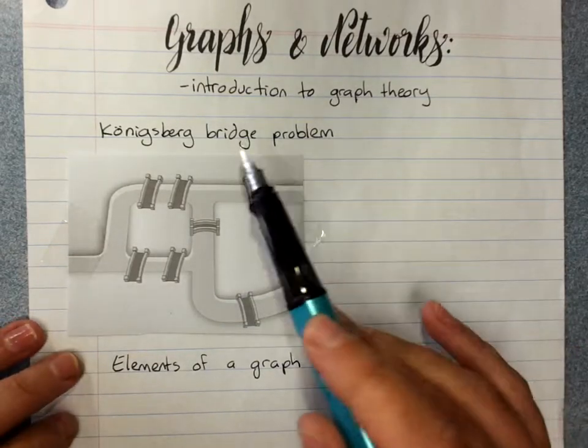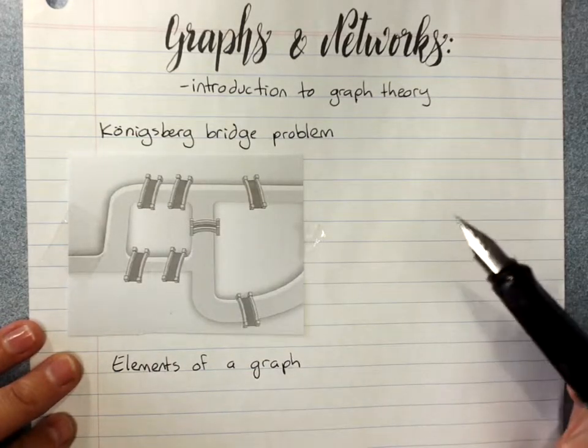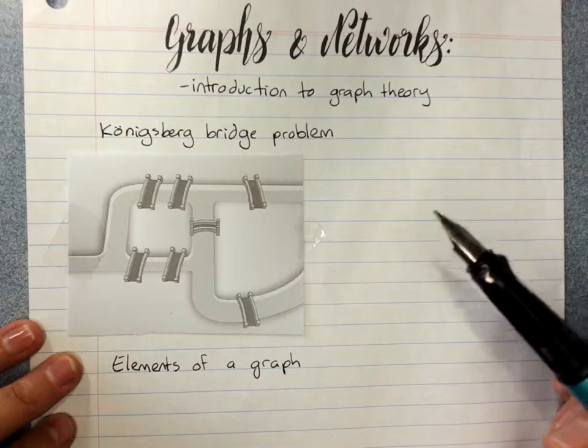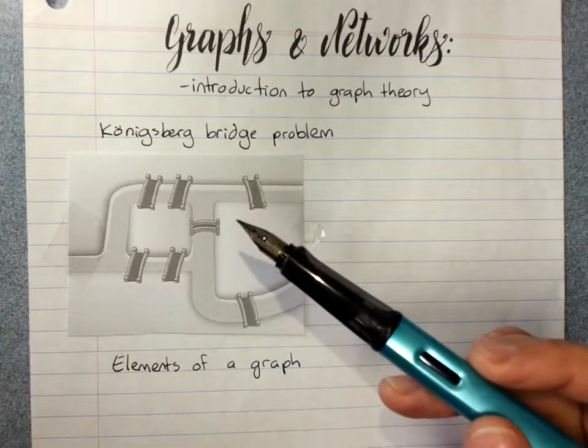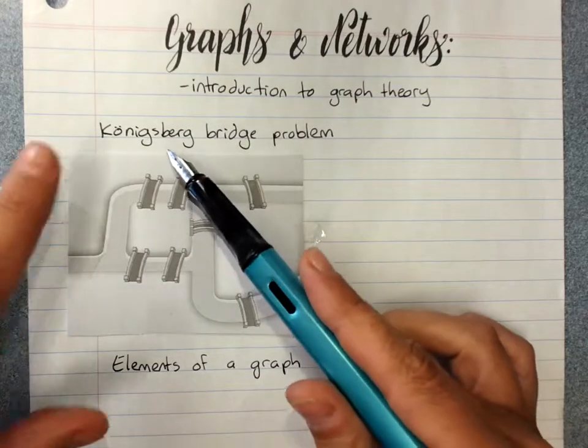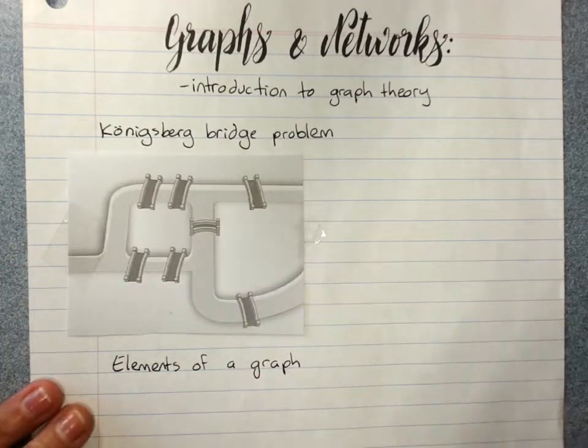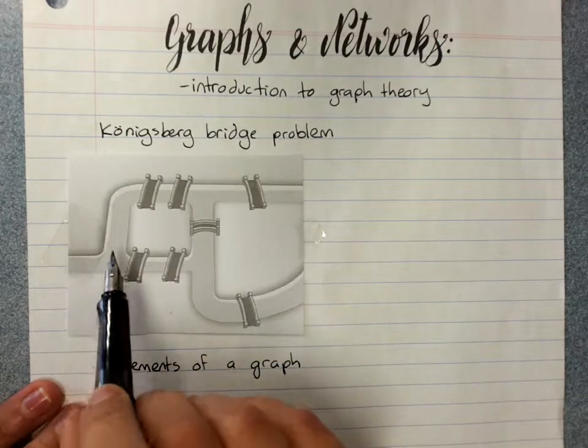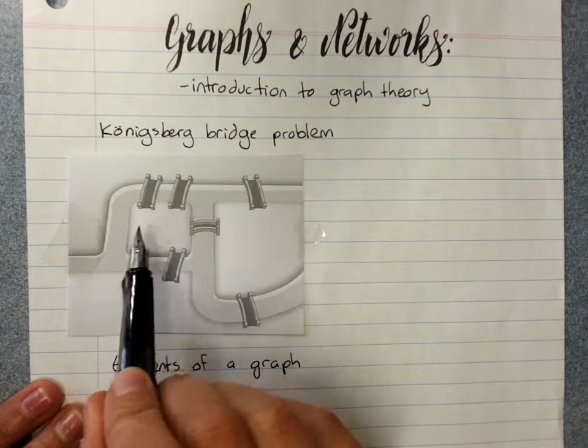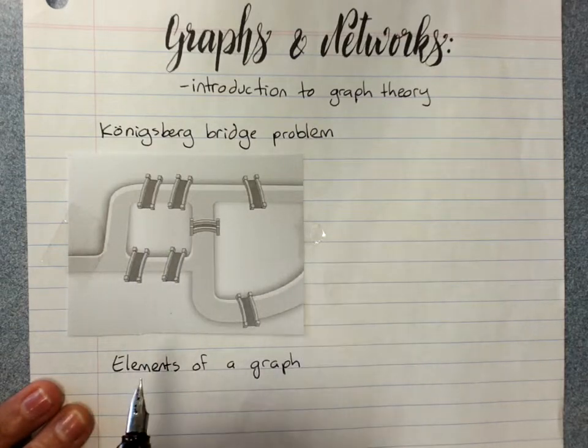So the problem that began this whole branch of mathematics is known as the Konigsberg bridge problem, and there was this northern European city called Konigsberg, probably city of the king I suspect, and it had a river running through it. This is a river and we've got an island and another island surrounded by the river, in the middle of the river.